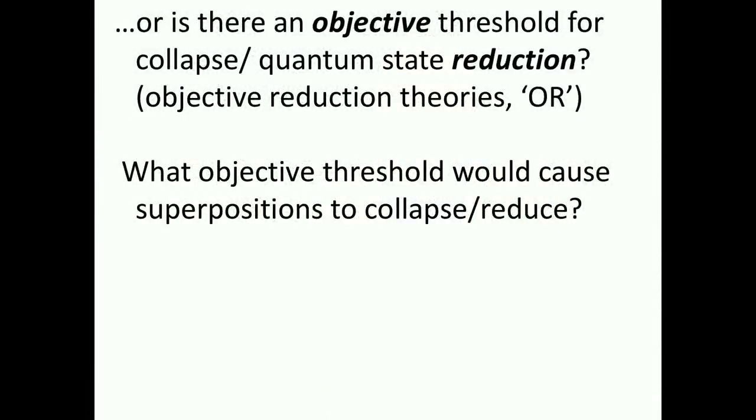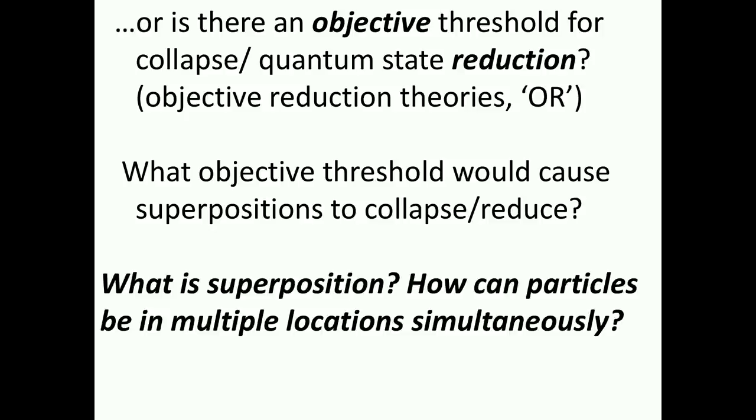Or is there an objective threshold for collapse quantum state reduction? Objective reduction or OR. Girardi Remini and Weber had an idea that a certain number of particles in superposition would self-collapse, but that didn't quite work out. What objective threshold would cause superpositions to collapse or reduce? But first, let's ask a question. What is superposition? How can things actually be in multiple states or locations at the same time? It's illogical. It doesn't fit with our classical world, but, of course, that's a problem. But how can that happen?